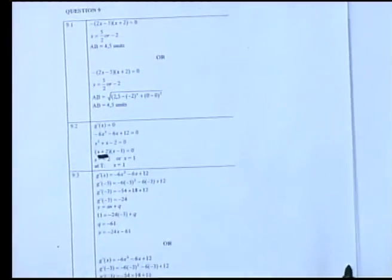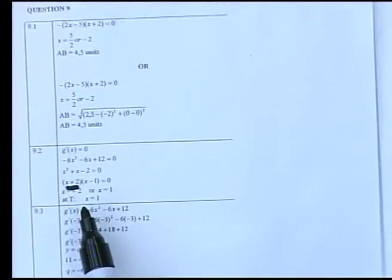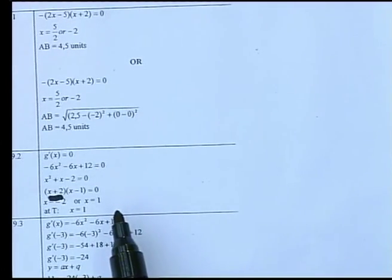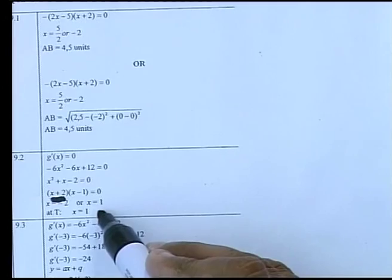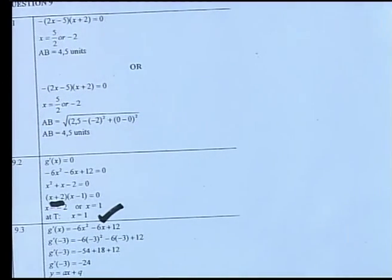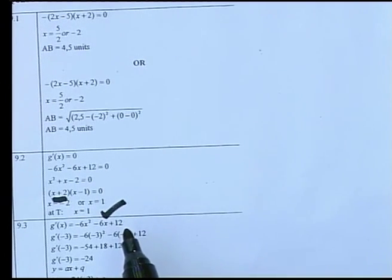And the x plus 2 gives me a value x equals minus 2, or the other x value is 1. And since we've already had the x value of minus 2 at A, we are now finding at T the x value should then be x equals 1.